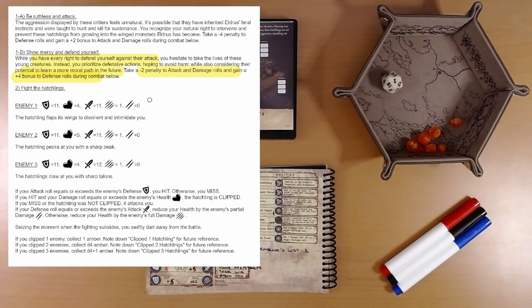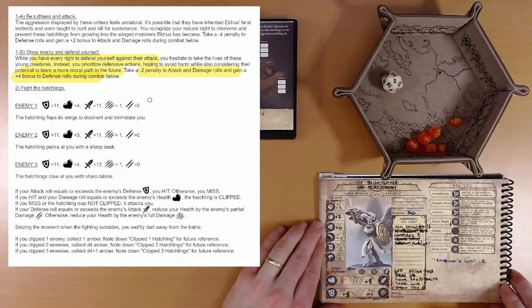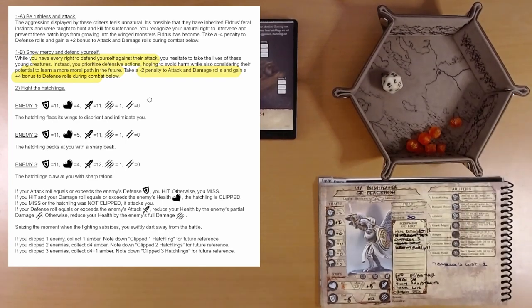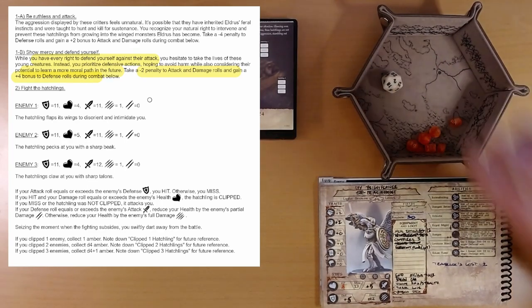Enemy one. The hatchling flaps its wings to disorient and intimidate you. Very intimidated by the baby owl. All right. First, we attack first, right? And we want to beat this defense of 11.